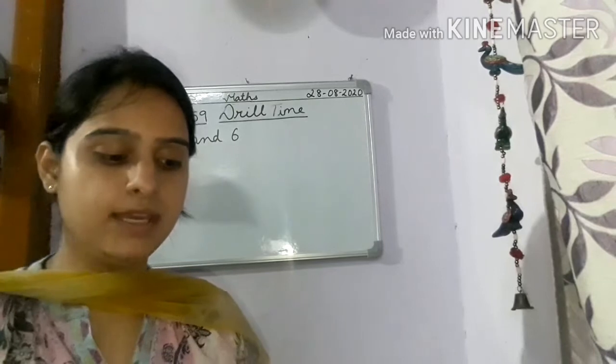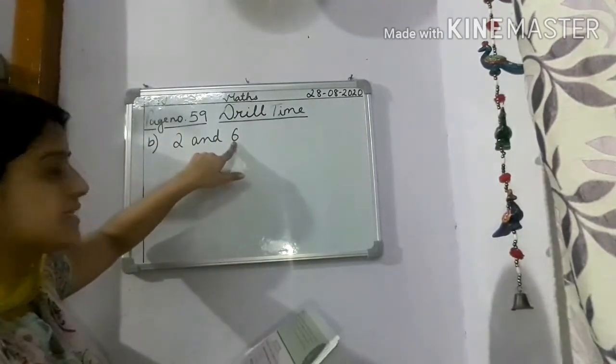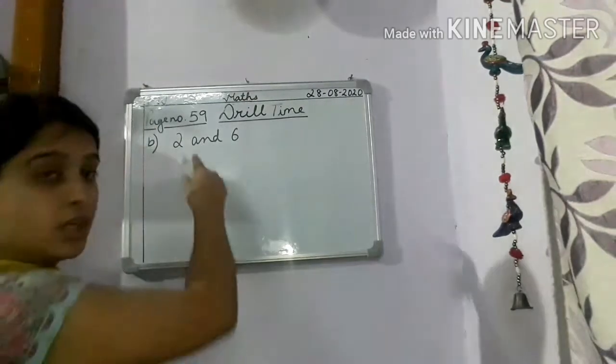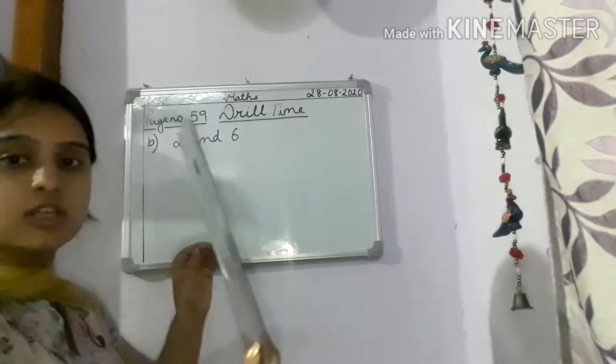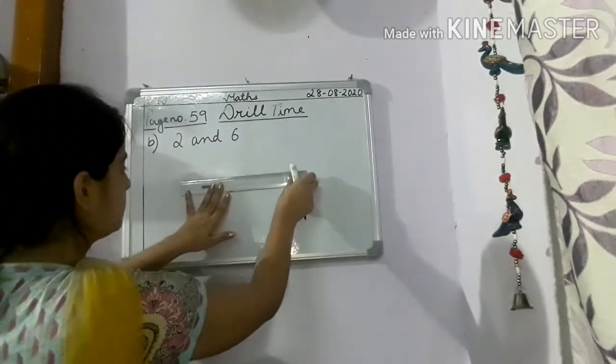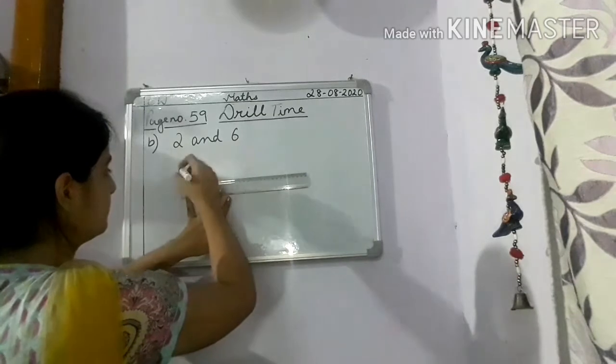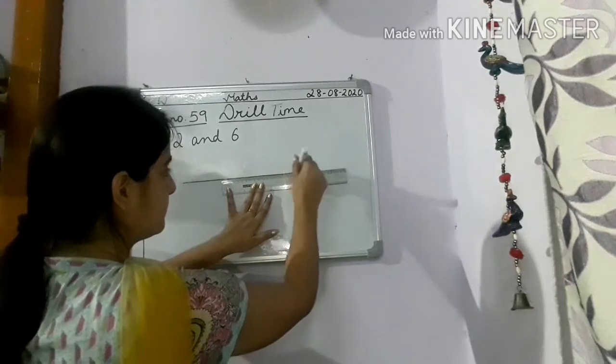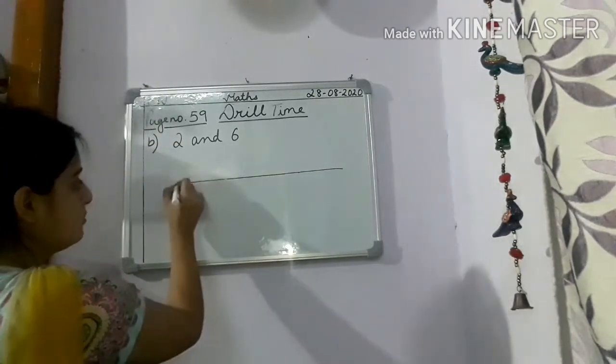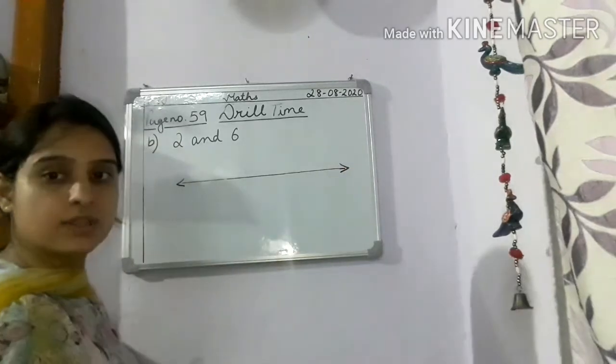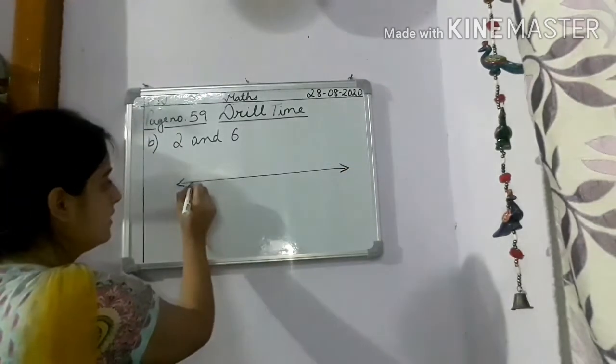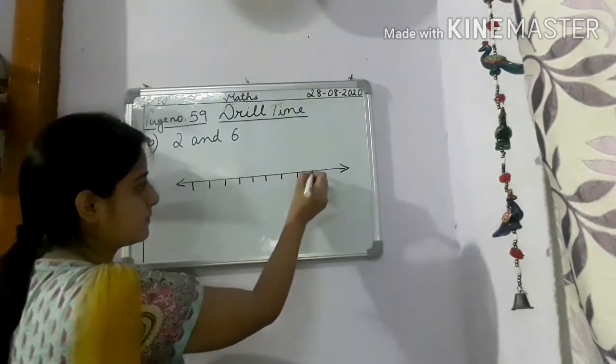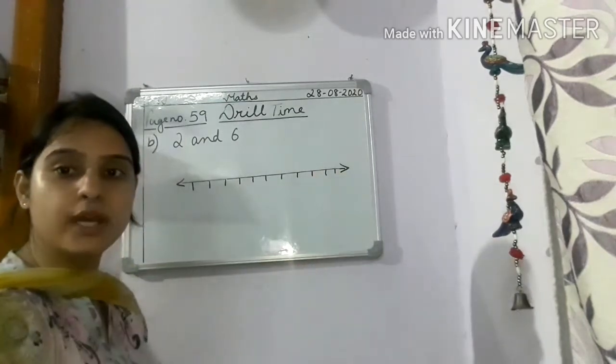So next children, we add 2 and 6, 2 and 6 using number line. So again, write the question 2 and 6, take your scale, draw line. Then put arrows on both the side. Now children, give equal space.